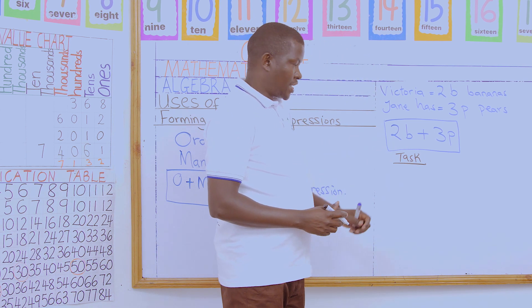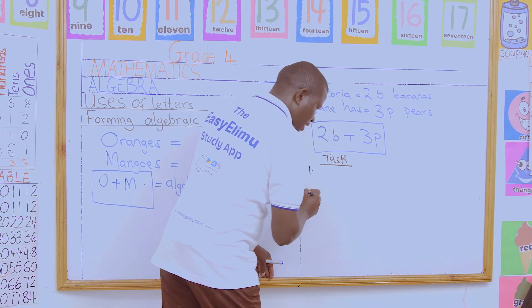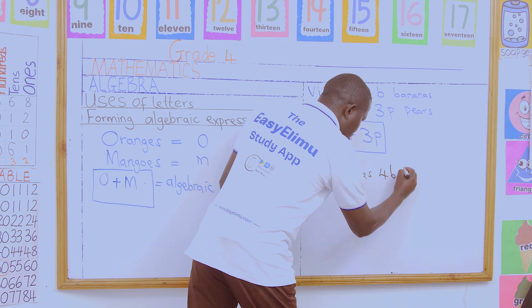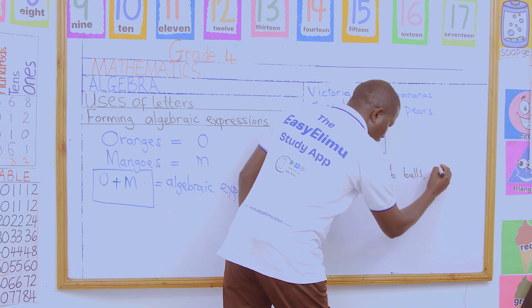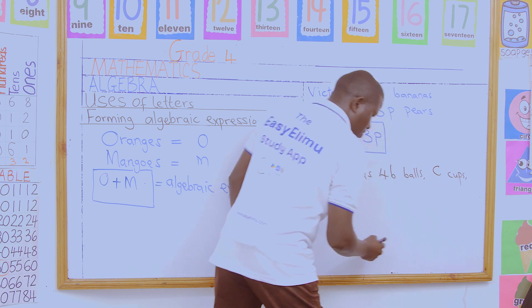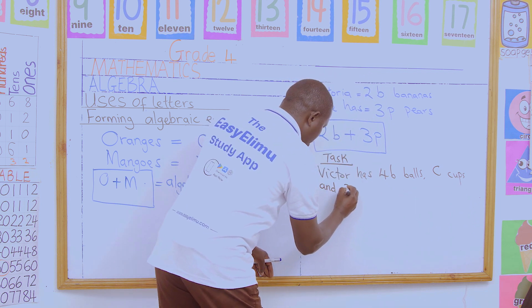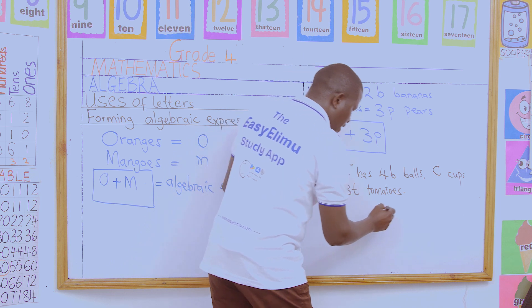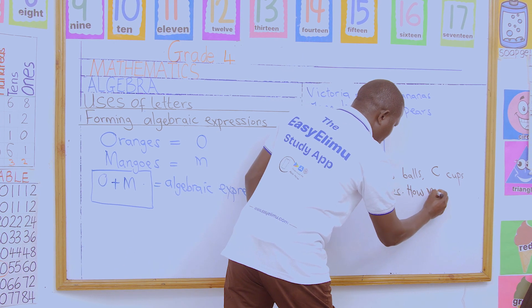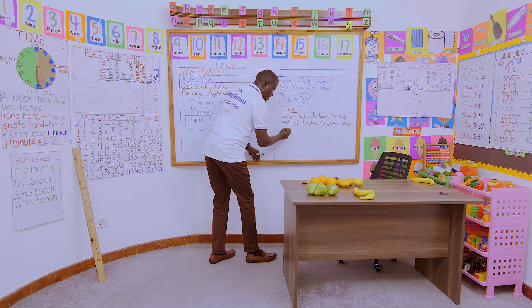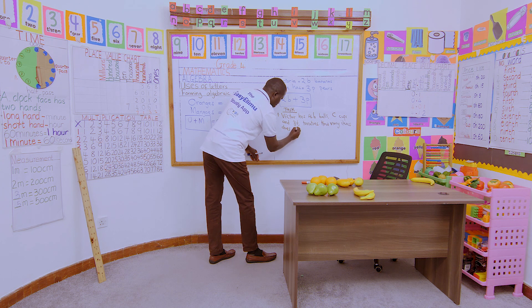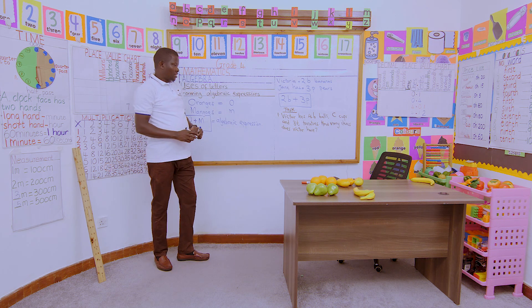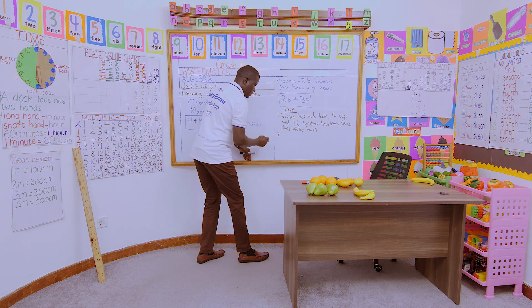Task number one: Victor has 4b balls, he also has c cups, and three t tomatoes. How many items does Victor have altogether? Remember, you are bringing them all together and forming an algebraic expression — work it out the way we did in our first two examples.